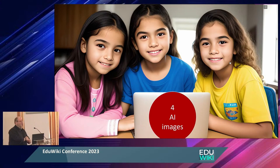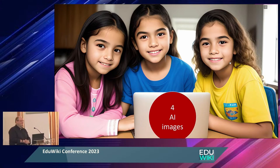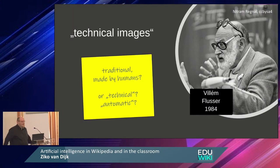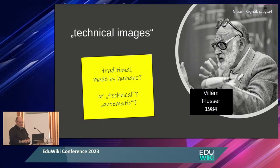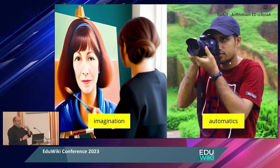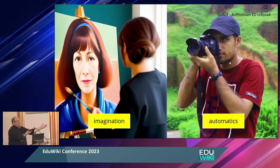AI images. I'm a historian. There's this Flusser theory — I'm just summarizing it. There are two different things: an image can be made traditionally by humans, or it is technical or automatic. Images made with human imagination go via the human brain — that's like stable diffusion. The other thing is so-called automatic: it's automatic light going into your camera on the sensor. That's a technical image. Photography is a technical image.